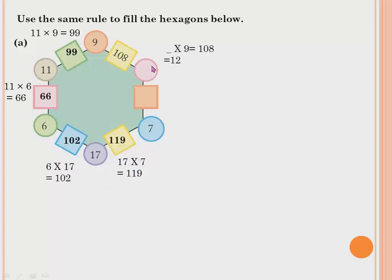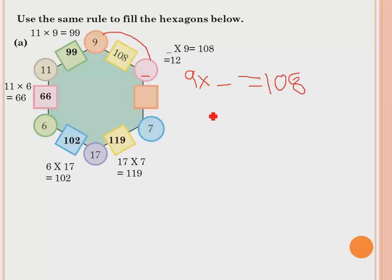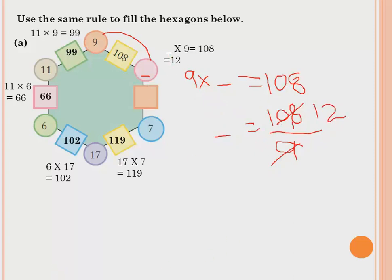Here there is a question mark — we don't know the number in one circle, but we know the box is 108 and the other circle is 9. So: unknown × 9 = 108. To find the unknown, divide: 108 ÷ 9 = 12. So the answer in that circle is 12. Now 12 × 17 = 84. We've completed all boxes in this hexagon.